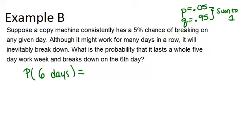So the probability that it will be fine for five days and then on the sixth day break down would be this. We take 0.05, the probability of failure, and raise that to the fifth power.